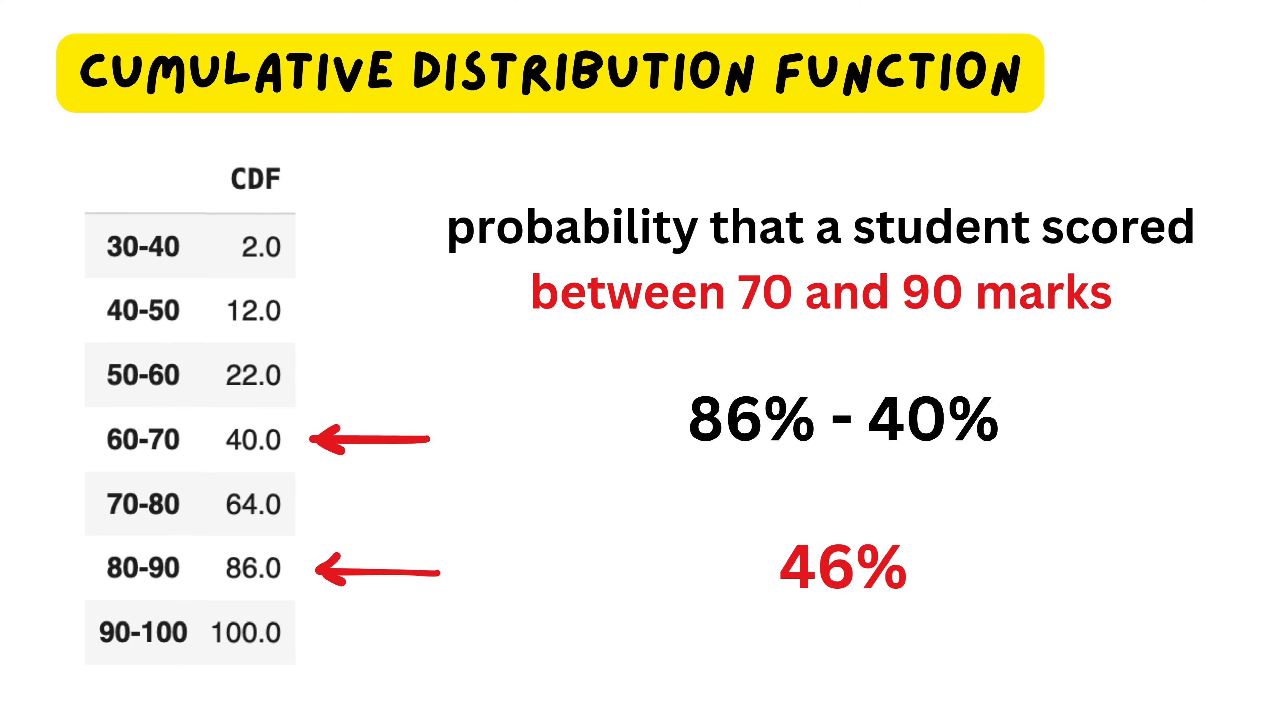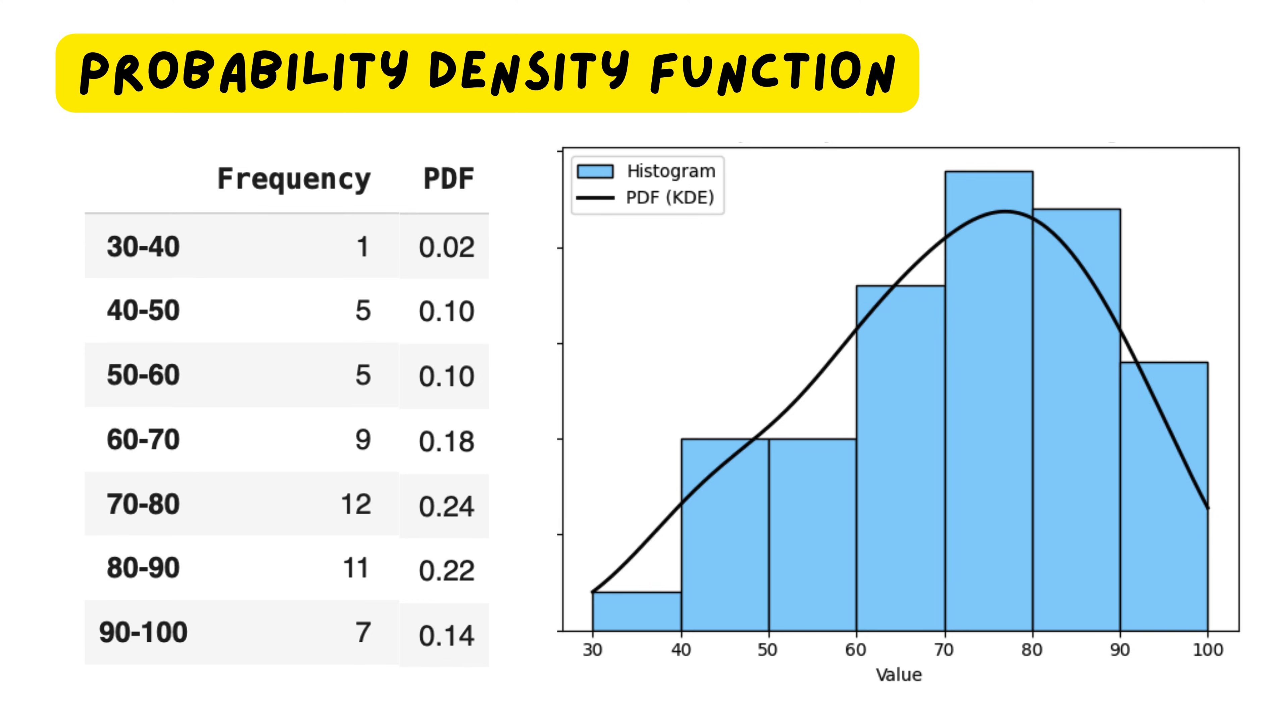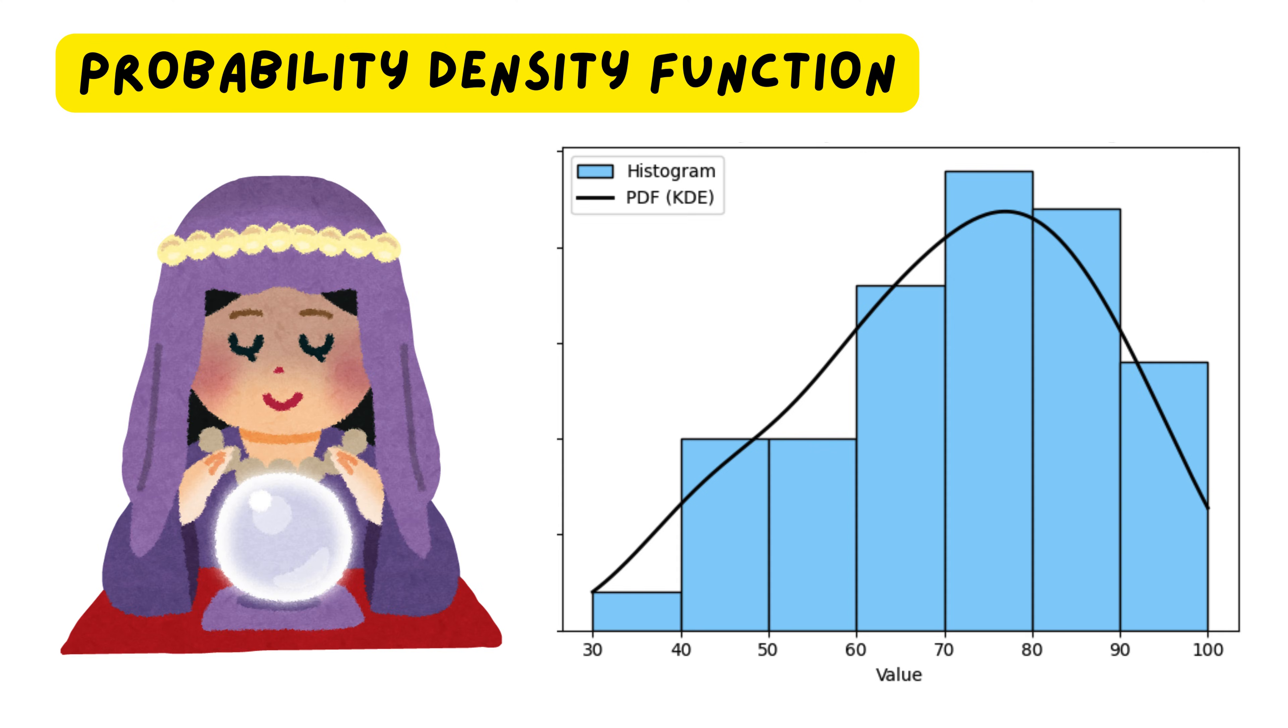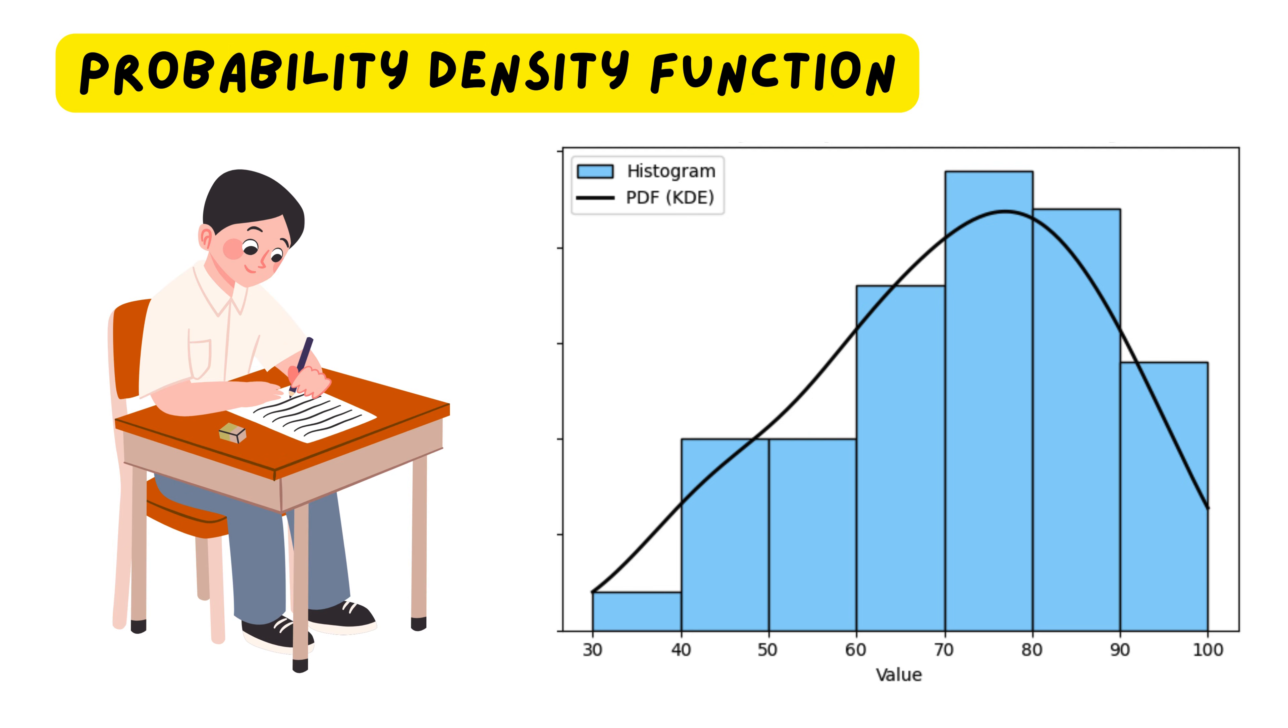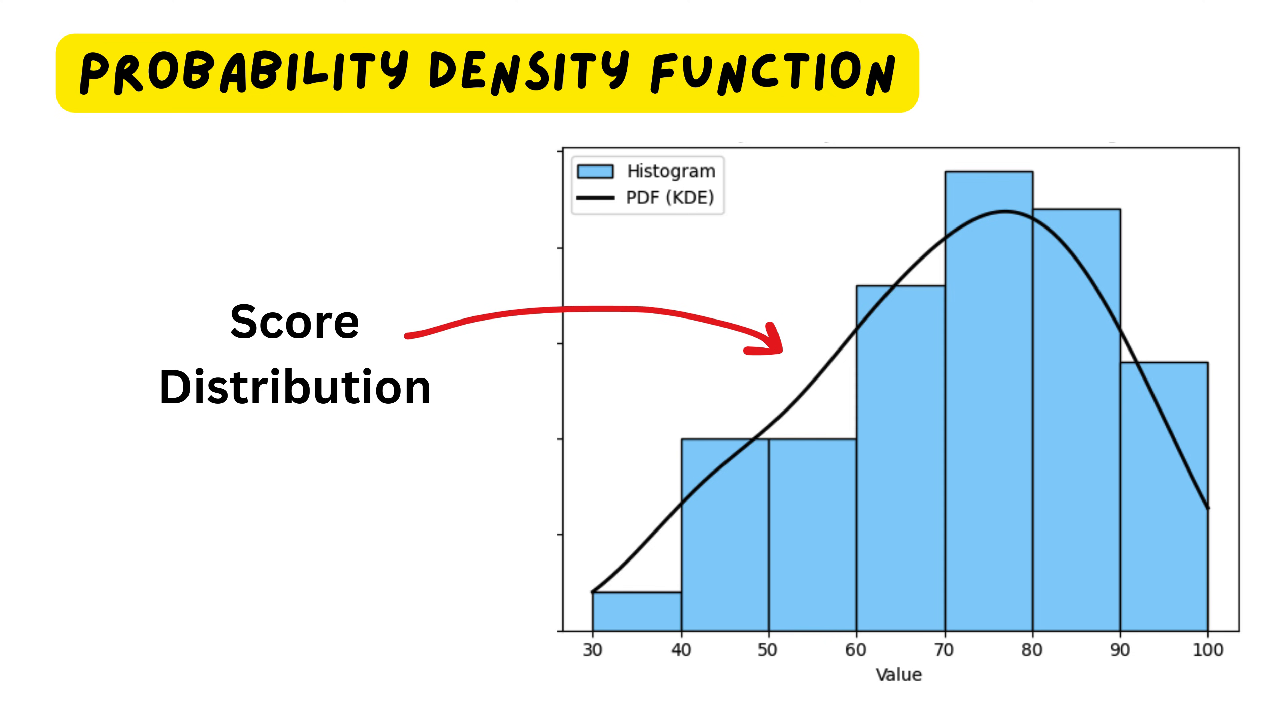Now, while the CDF tells us the probability of scoring below a certain mark, sometimes we are more interested in how likely a specific range of scores is. This is where the probability density function, or PDF, comes in. Think of the PDF as the smooth version of our histogram like this for our case. The histogram tells us how many students fall into each range, but if we want a continuous curve instead of bars, we get the PDF. Now, why do we need the PDF and CDF instead of just using the histogram? The answer is prediction. The histogram is useful for analyzing our specific class, but the PDF and CDF generalize the pattern. This means we can estimate probabilities for other students, even if we don't have their marks yet. For example, if another class of 50 students takes the same test, we can use the PDF and CDF to predict how their scores might be distributed.